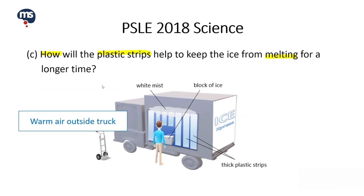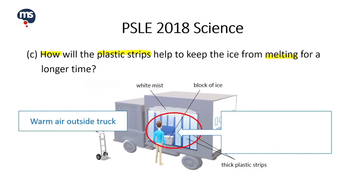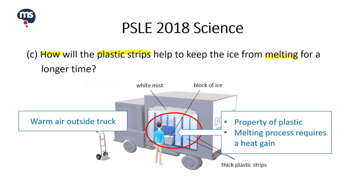Let us take a look at Part C: How will the plastic strips help to keep the ice from melting for a longer time? There are two key concepts we should focus on. The first one is about the property of plastic — plastic is a poor conductor of heat. Thus, it will help to slow down the heat gain by the ice from the warmer air outside the truck.